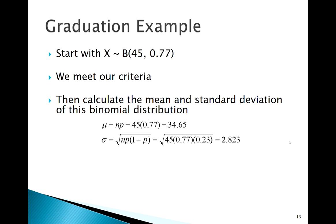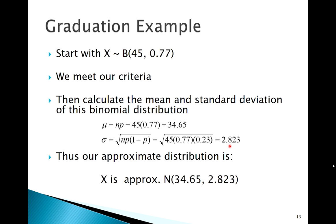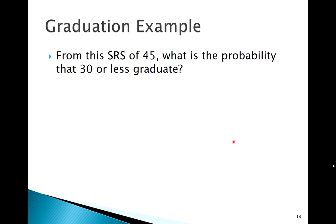So calculating the mean, calculating this binomial mean, n times p, we get this. Our binomial standard deviation, we get this. So our approximate distribution is normal with those parameters. Mean of this, standard deviation of this.